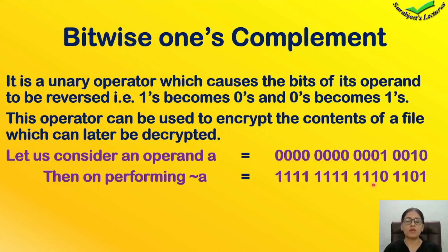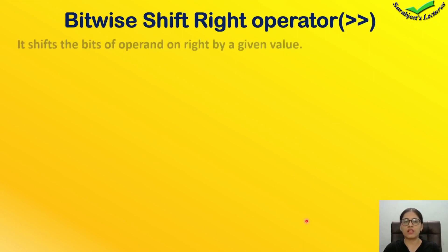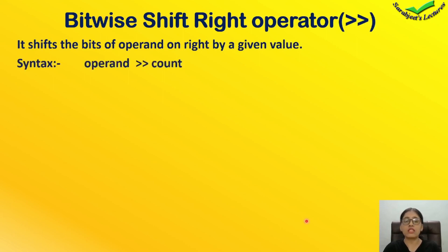So if we reverse the number bit by bit, that gives us the one's complement. Now, the bitwise shift right operator shifts the bits of the operand to the right by a given value. We write the count to specify how many bits we want to shift to the right side.